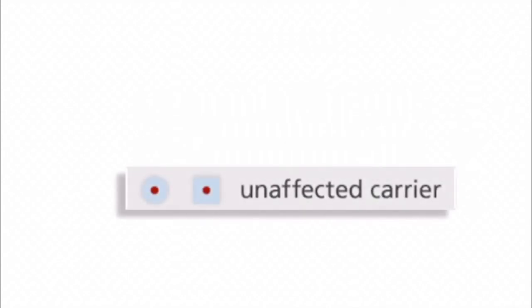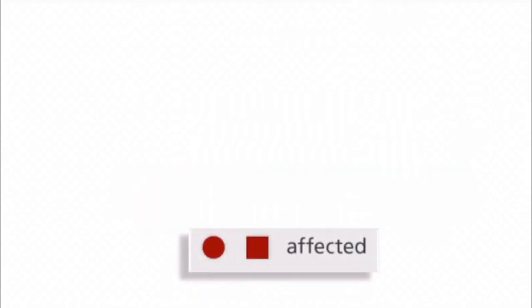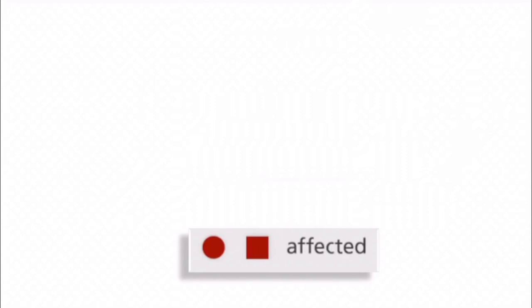Central dot or central coloration indicates the unaffected carrier and the total change of color indicates that the person is affected. So, unaffected has no color change and affected has color change. Please observe the pedigree first and then you have to identify the type of disorder.